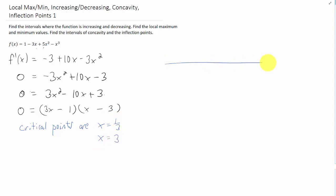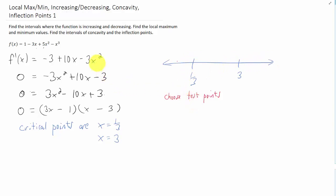These critical points allow us to split our interval up into pieces, because we know that a function can only change from increasing to decreasing, or vice versa, at a critical point. So if we choose a test point from each one of these three intervals and plug that test point into the first derivative, we can see if the function is increasing or decreasing on the entire interval.